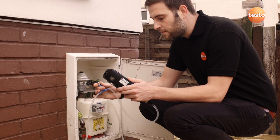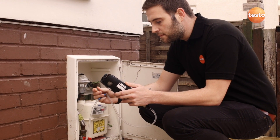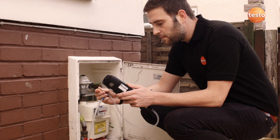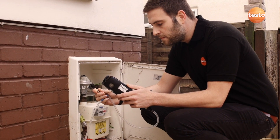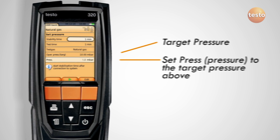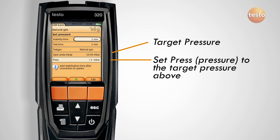Use the blue gas relief valve to reduce the pressure in the system to the target pressure shown on the analyzer. The pressure reading on the bottom line needs to be set to the target pressure shown above, in this case 10 mB.